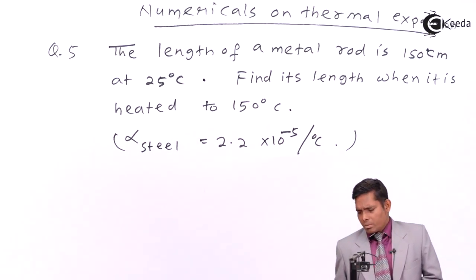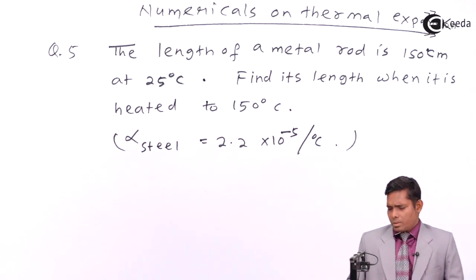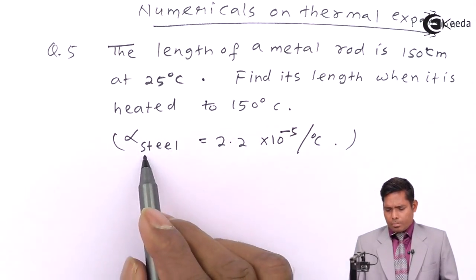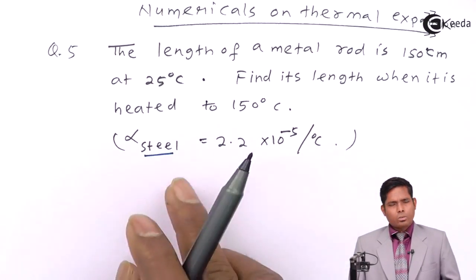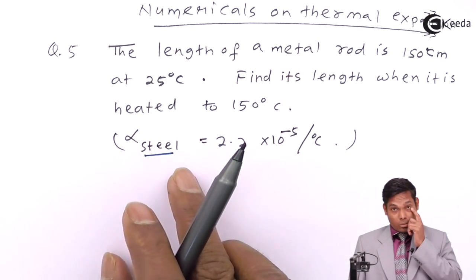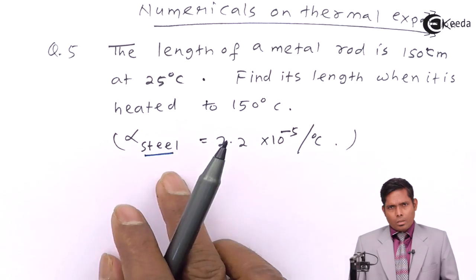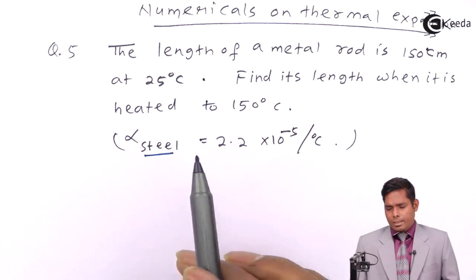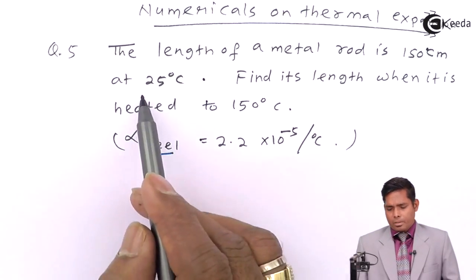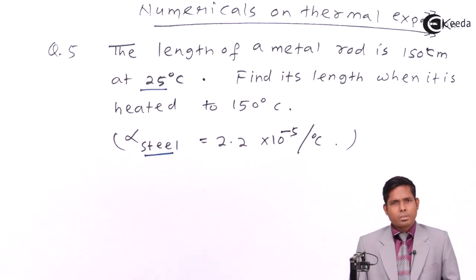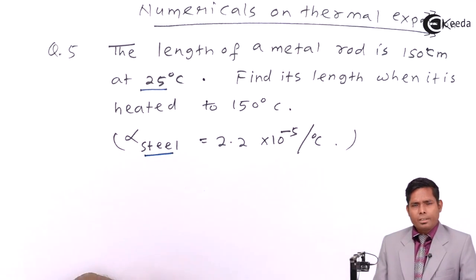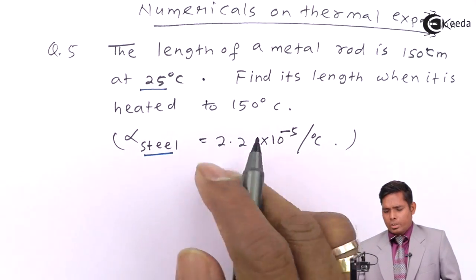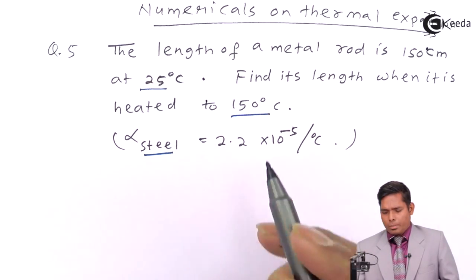So it is a very simple question if you just use the formula. The length of the rod, which is made up of steel, is 150 cm. So the initial length is 150 cm corresponding to the temperature 25°C, and finally its length when it is heated to 150°C.